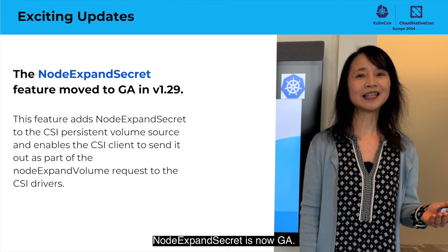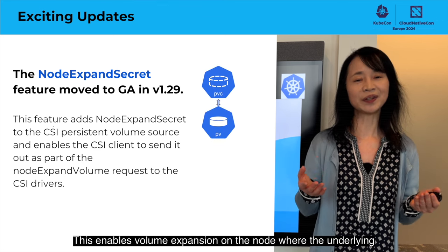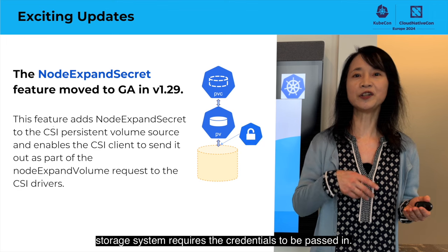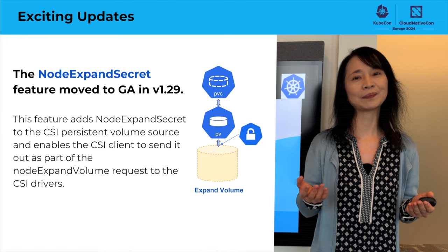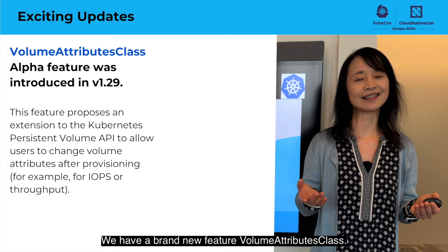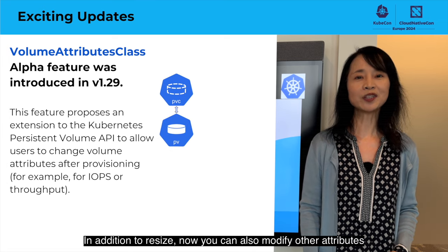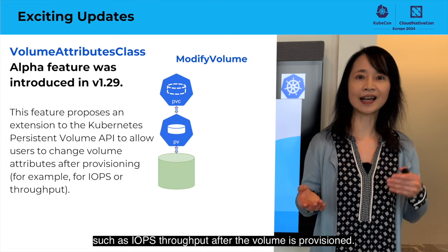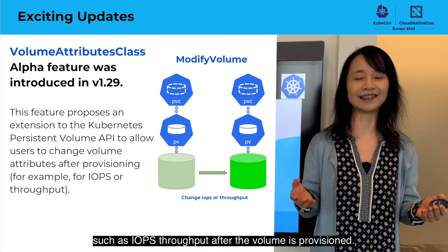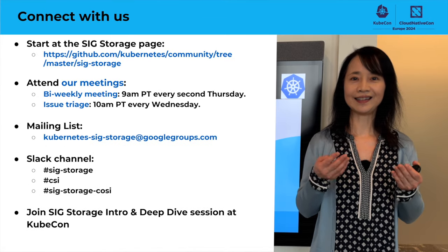NodeExpansionSecret is now GA, which enables volume expansion on the node where the underlying storage system requires credentials to be passed in. We have a brand new feature: Volume Attributes Class. In addition to resize, you can now also modify other attributes such as IOPS throughput after the volume is provisioned. Come to our KubeCon session to learn more. Thank you.